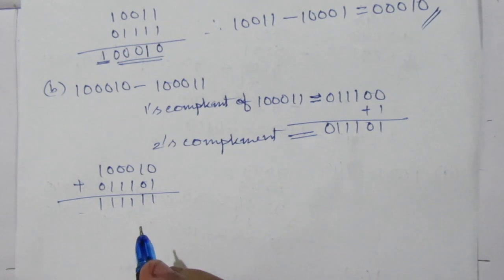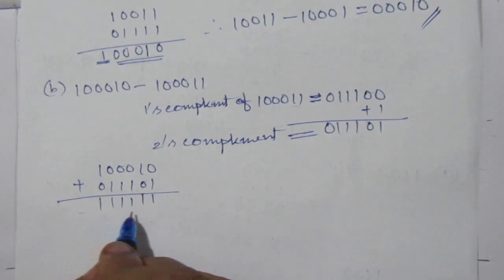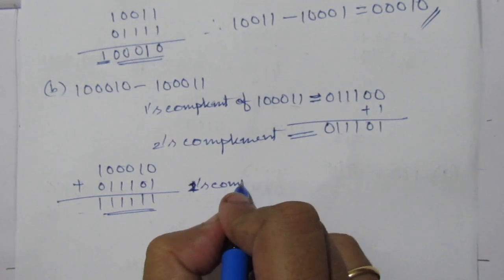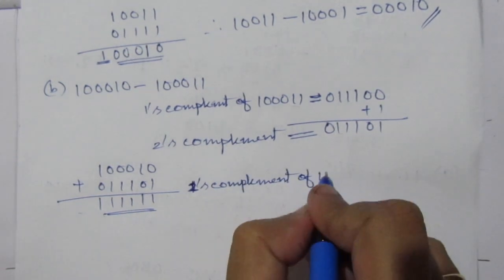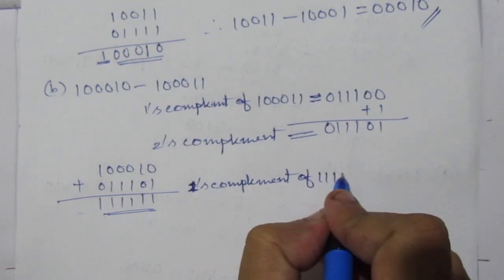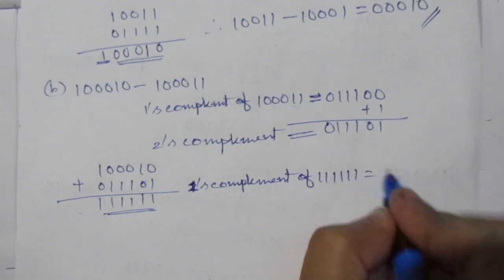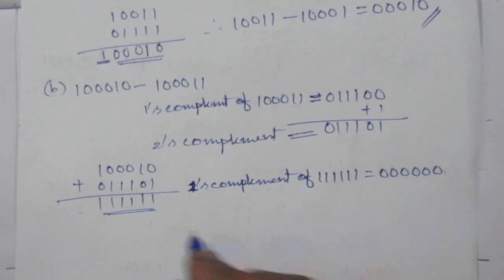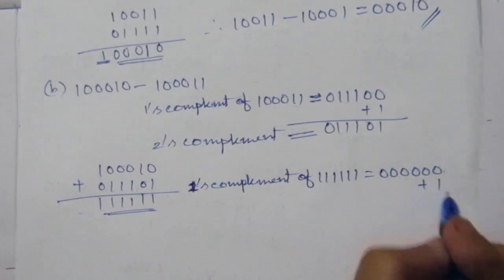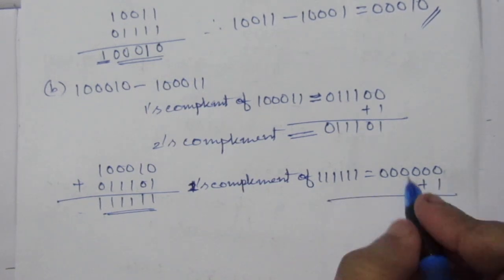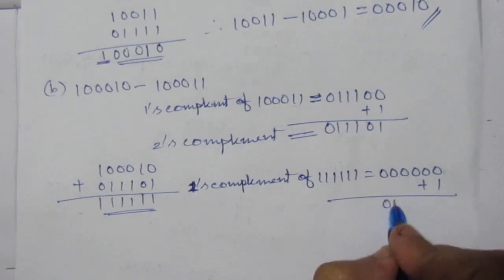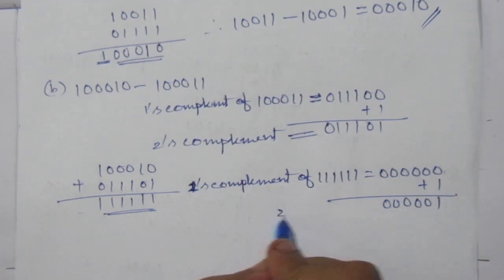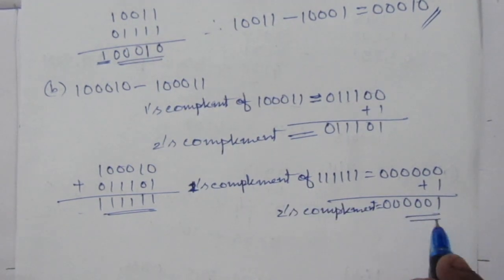When the answer is negative (no carry), you have to again find the 2's complement of this result. The 1's complement of 111111 equals 000000. Add 1, then we find 000001. So this is the 2's complement.